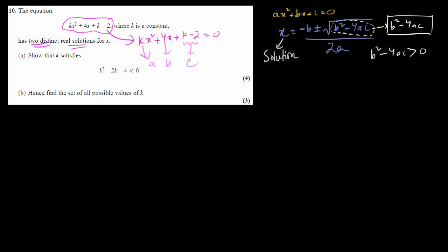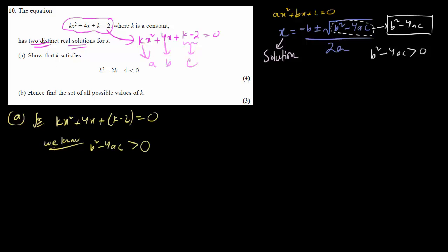We don't have to solve anything; we just have to check whether this is true or not. Since it is given, we can assume it is true. So for the equation kx squared plus 4x plus k minus 2 equals to 0, it is given that b squared minus 4ac is greater than 0 because the roots are real and distinct. Substituting: 4 squared minus 4 times k times (k minus 2) greater than 0, which gives 16 minus 4k squared plus 8k greater than 0.